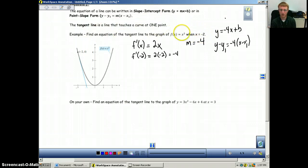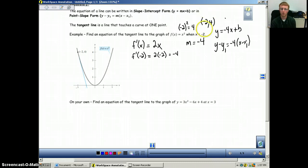So that means we plug negative 2 into our original equation, negative 2 squared equals 4. So the coordinate we're dealing with here is negative 2, 4. So we can use this point.